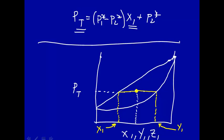This is called a tie line. For example, you say this is length L1 there and this is the length L2 here. So there's a relationship between the length of these lines — these are called tie lines — and the total amount in the vapor phase and in the liquid phase.